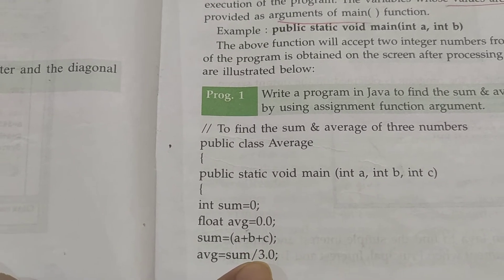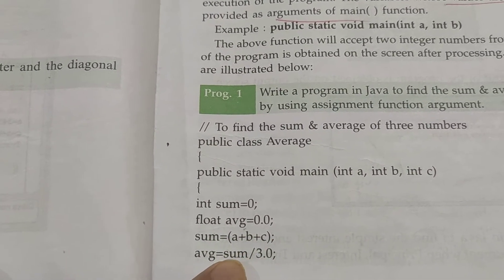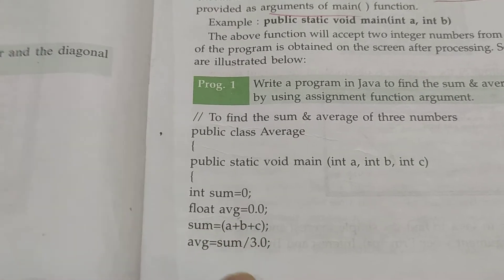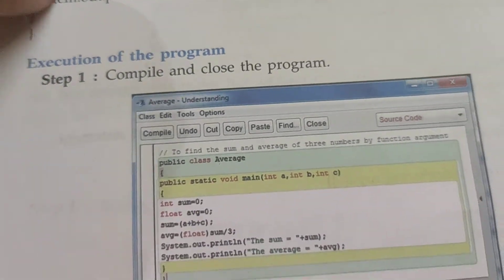This is mathematical operations. Average will be sum over 3. Okay, now we have to print them here. We have to print them, so what will happen? See.